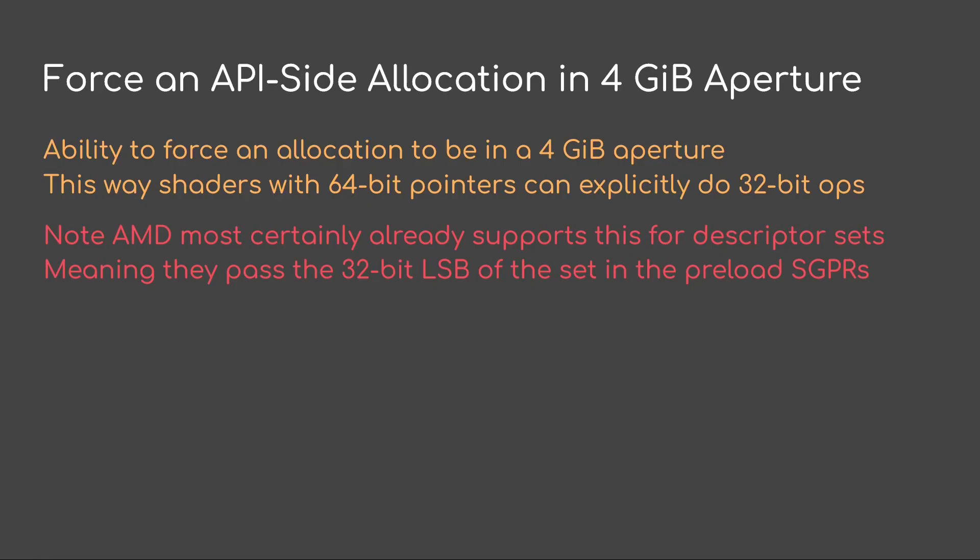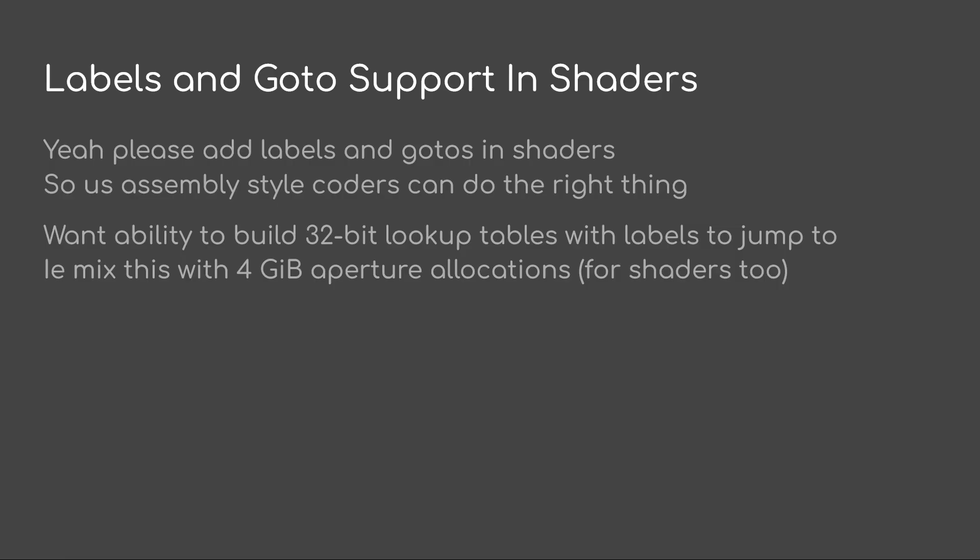You'd want to be able to do this for things beyond just descriptor sets — for shaders, and for allocations for data too. I'd like to see labels and goto support in shaders. It'd also be nice to be able to build 32-bit lookup tables with labels to jump to, mixing this with the four-gigabyte aperture allocations for shaders.